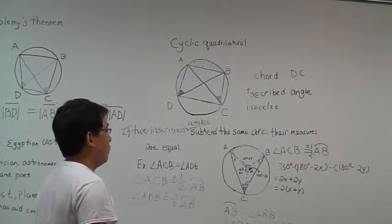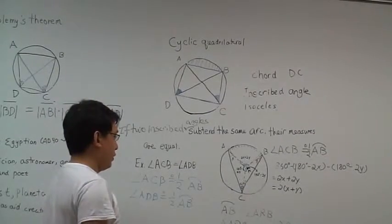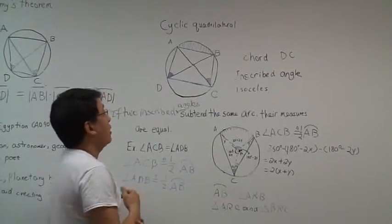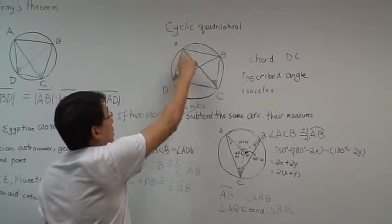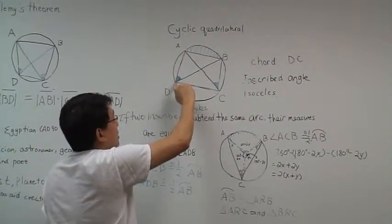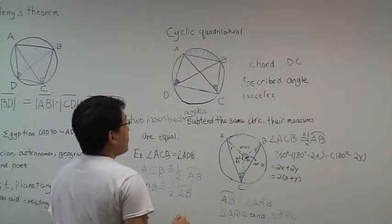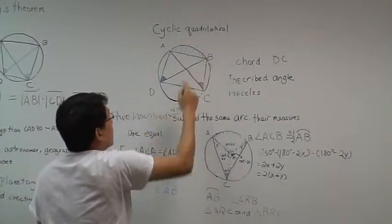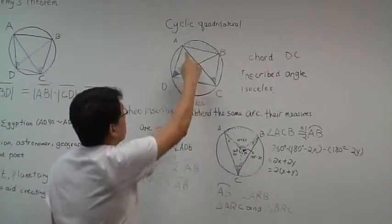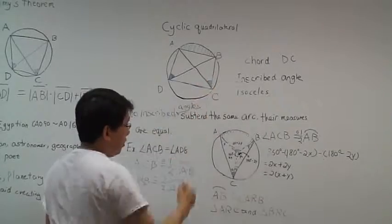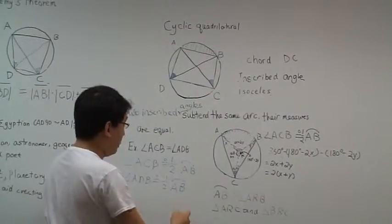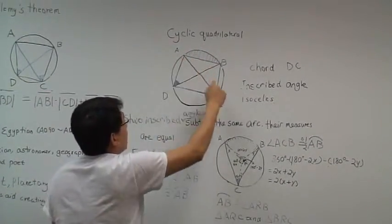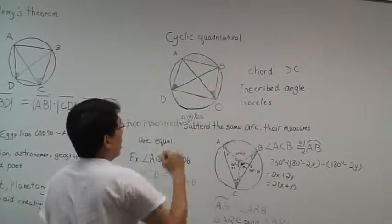Let me show you an example. On this graph right here, the inscribed angle ADB is half of the arc AB. Also, the inscribed angle ACB is half of the arc AB. Which means angle ADB and angle ACB are equal.